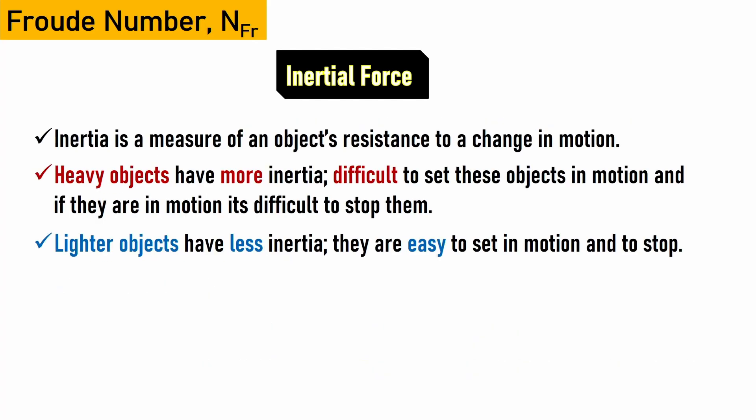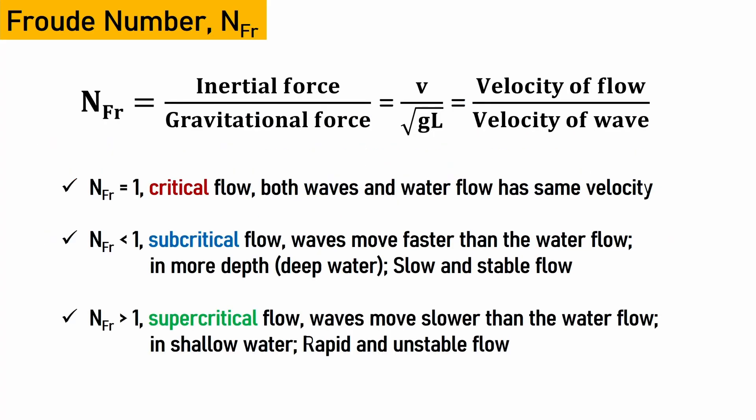Theoretically, inertia is a measurement of an object's resistance to change in motion. Inertia is greater in heavy objects, which are difficult to set in motion and, if already in motion, difficult to stop. On the other side, lighter objects have less inertia and are easy to set in motion and easy to stop. The gravitational force is simply the weight of the fluid element.